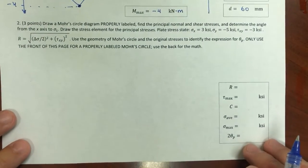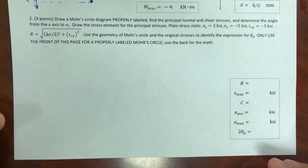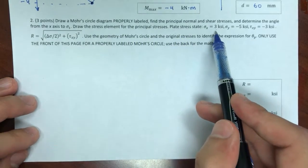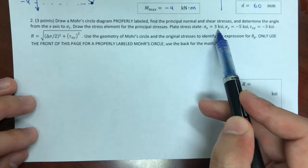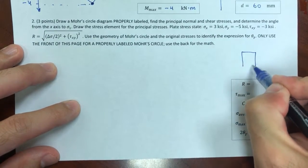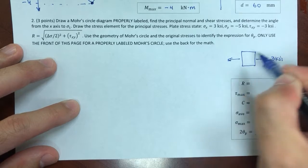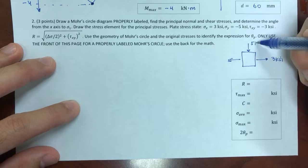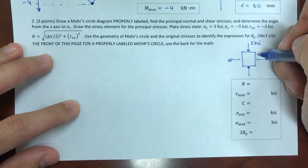Problem two: draw a Mohr's circle diagram, properly labeled. Find the principal normal and shear stresses, and determine the angle from the x-axis to sigma-1 (the first principal stress). Draw the stress element for the principal stresses. The given stress state has σ_x = 3 ksi, σ_y = −5 ksi, and τ_xy = −3 ksi.